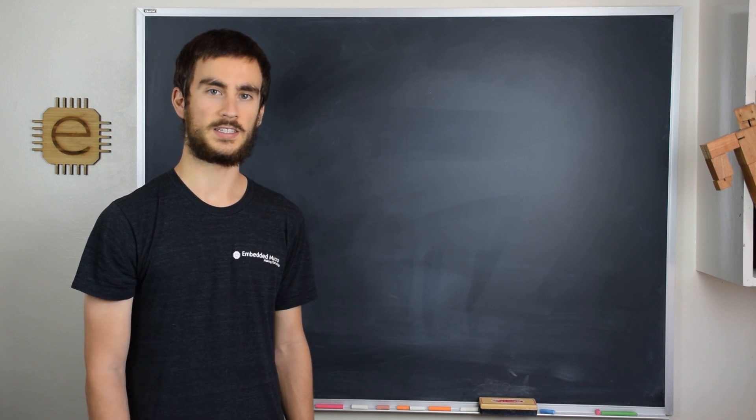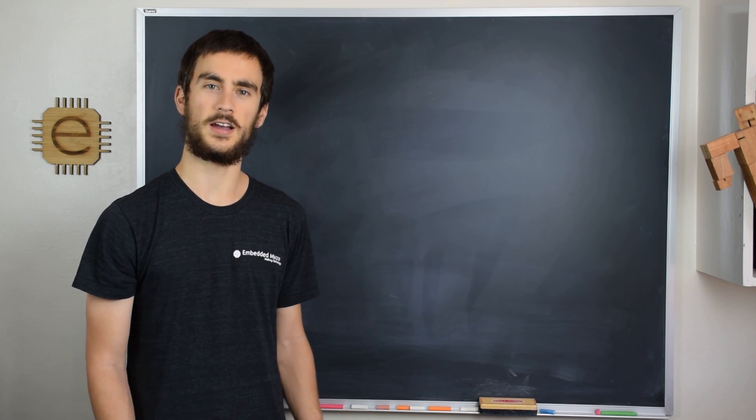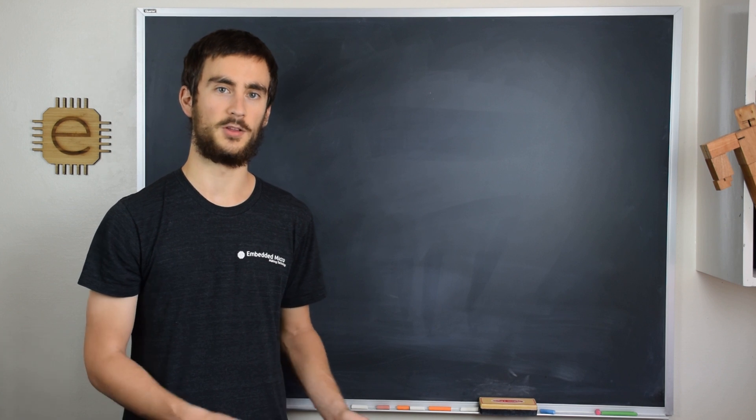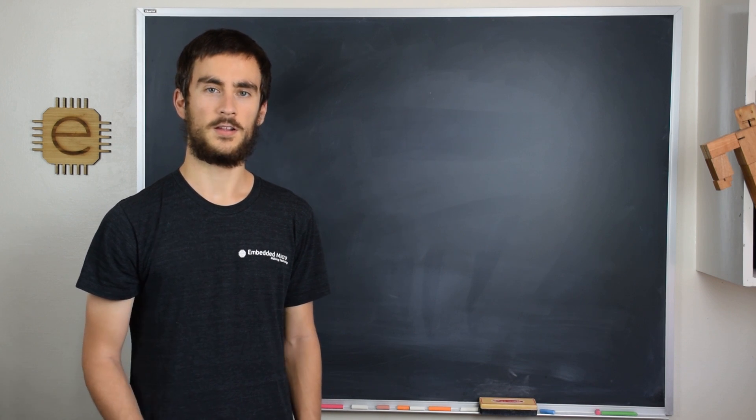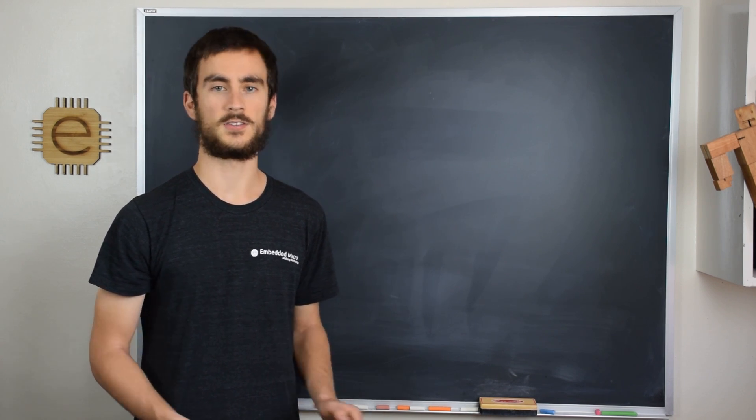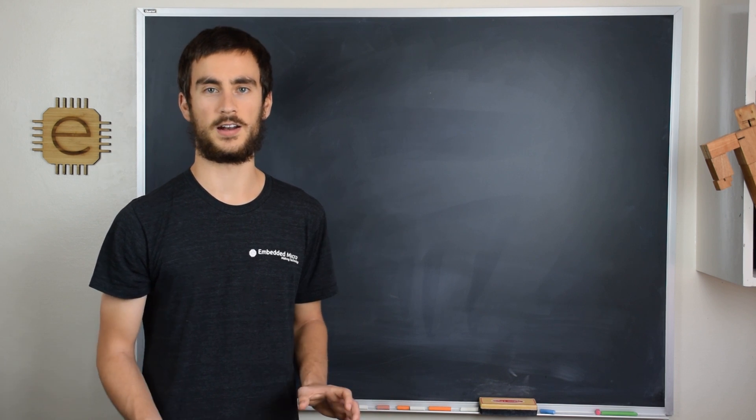Logic gates are the basic building blocks to any digital circuit or logic function. It's similar to how addition, subtraction, multiplication, and division are the core building blocks to any mathematical function. There are four basic kinds of logic gates: AND gates, OR gates, XOR, and NOT gates.